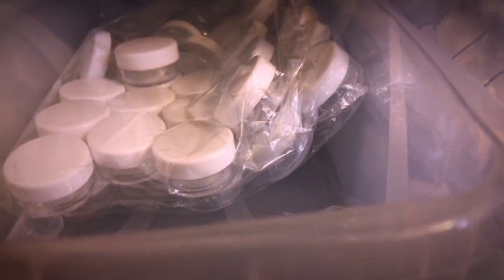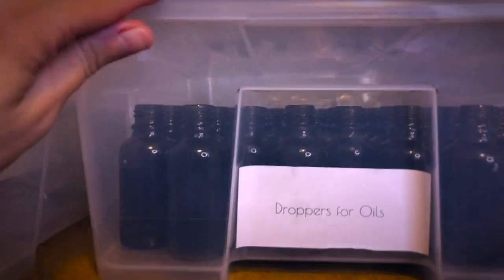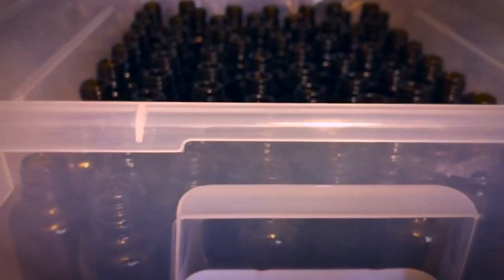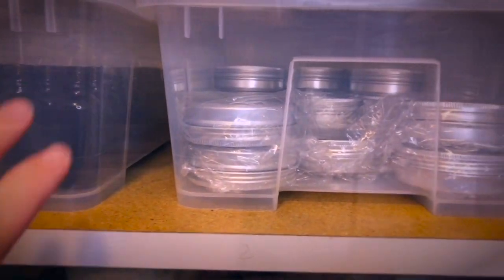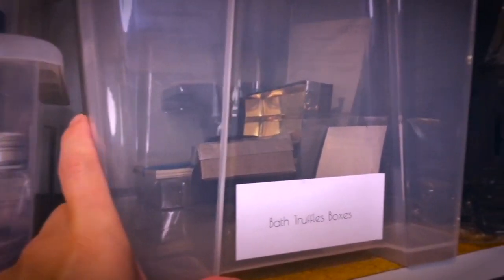Here are some aluminum tins, candle making stuff over here, and down here some other packaging as well as small tins for samplers, glass dropper bottles for hair and beard oil, aluminum tins and truffle boxes that I need to reorder as you can see.